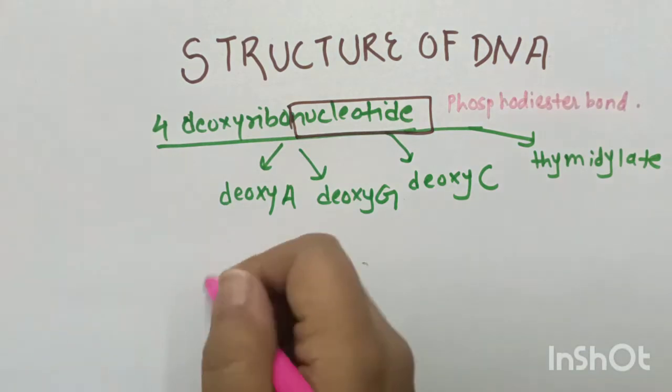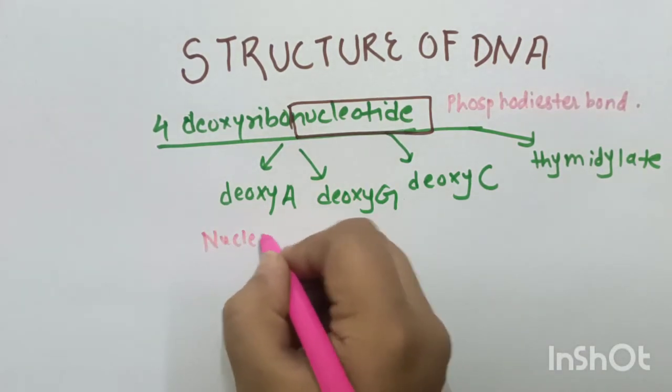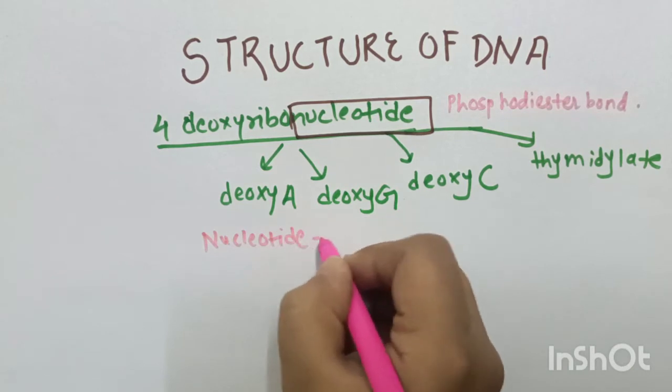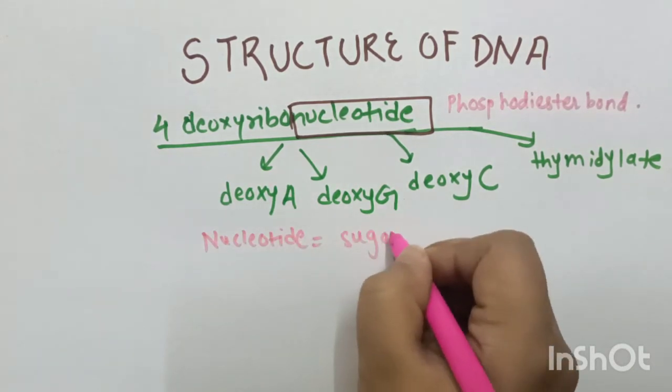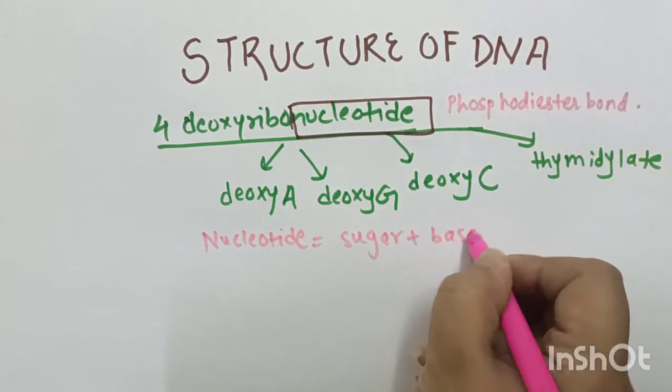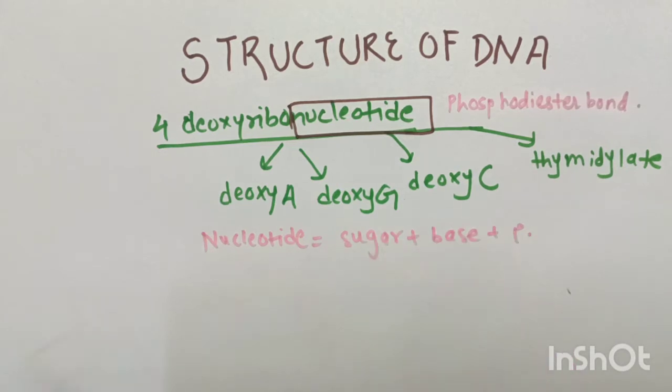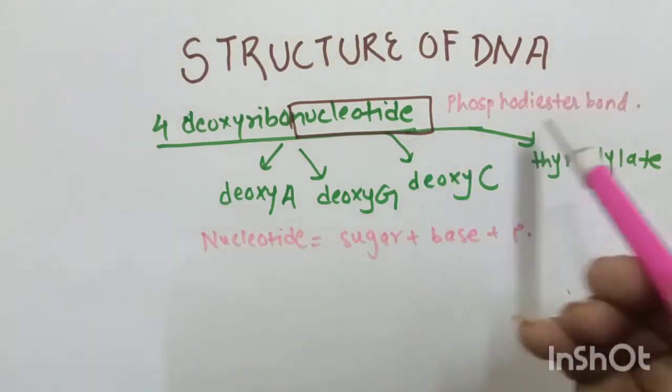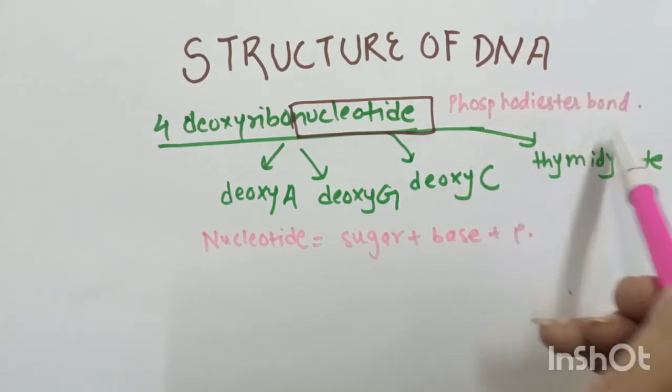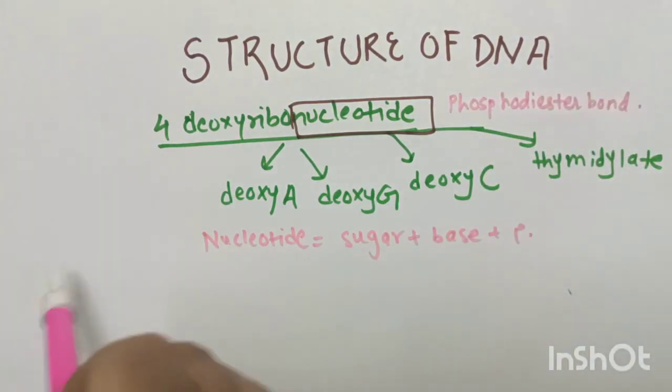If I tell you the structure of nucleotide, nucleotide is made up of sugar, base and phosphoric acid. This one nucleotide has a sugar, a base and a phosphoric acid. These various nucleotides together are joined by phosphodiester bond. This is present in the structure of DNA.